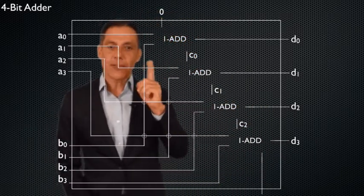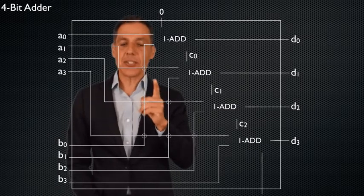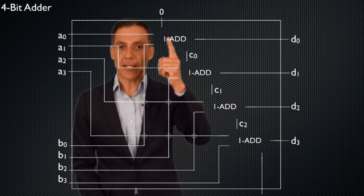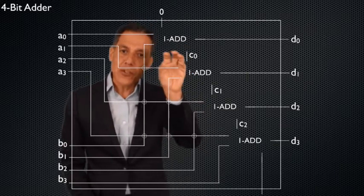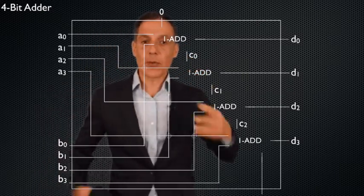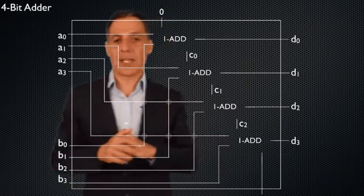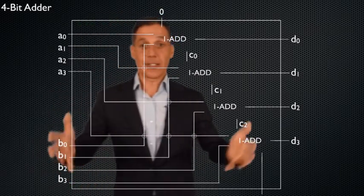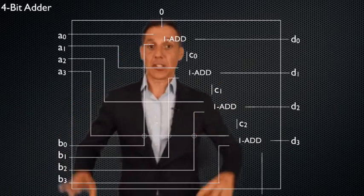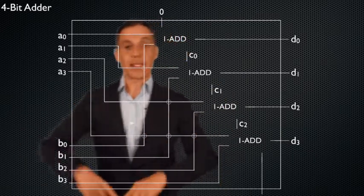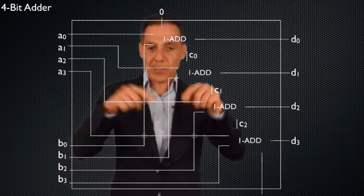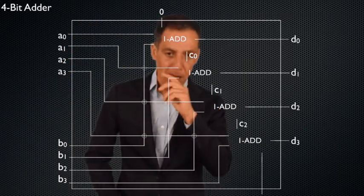Notice again the power of abstraction — notice how much easier this was once we had this building block. It's a lot like functions: once you build simple functions with defined functionality, you can use them over and over to build more complex things. I can take two 4-bit adders and make an 8-bit adder, then two 8-bit adders to make a 16-bit adder, each time abstracting away the complexity underneath.